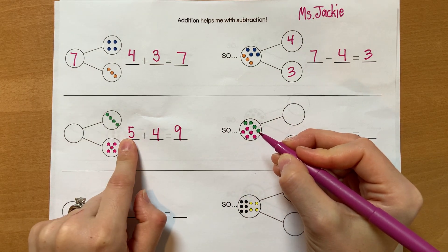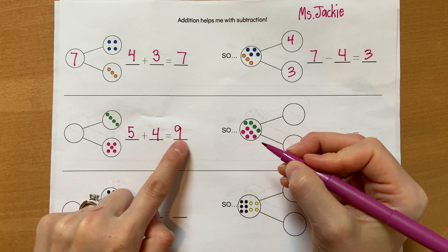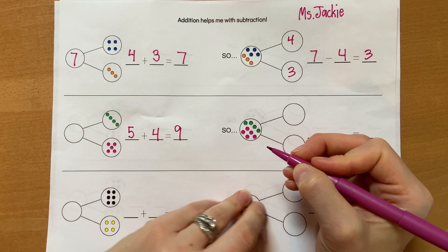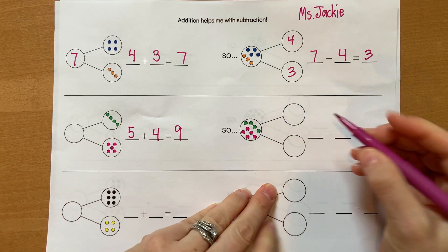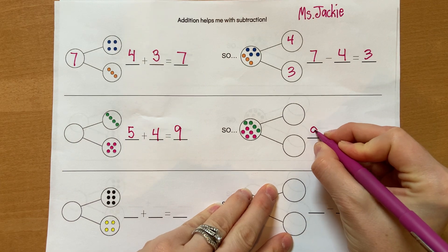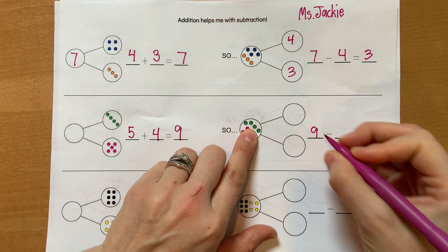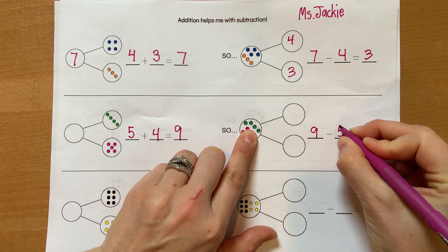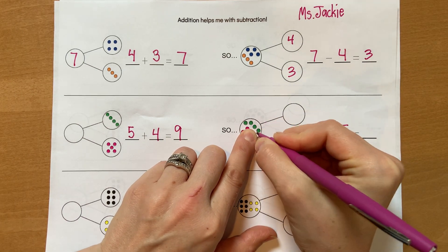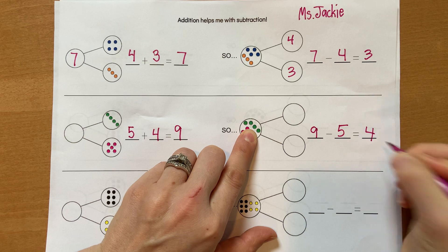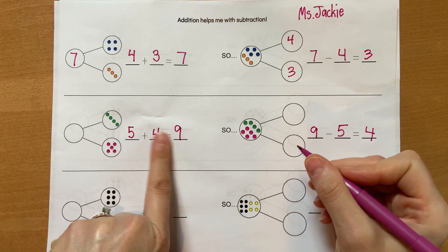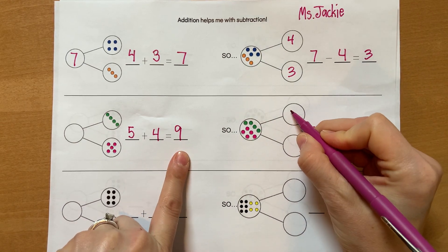If I take away five, it's going to be four. And if I take away four, it's going to be five. So I start with nine. And which one should we take away? Let's take away five. Nine minus five equals four. Yeah, the addition helps us with subtraction.